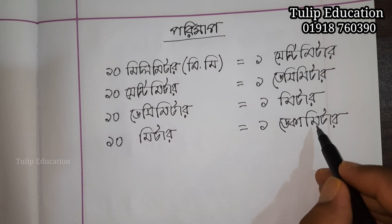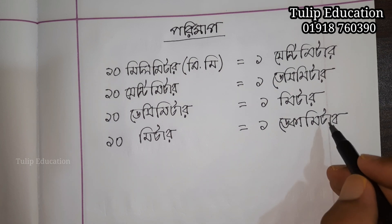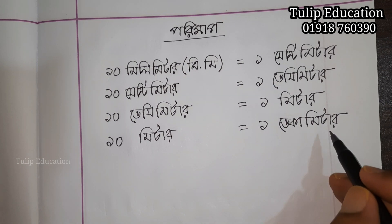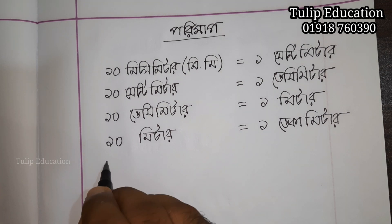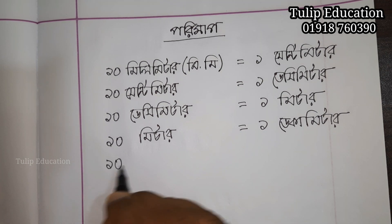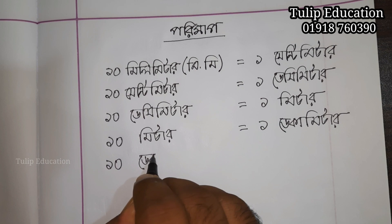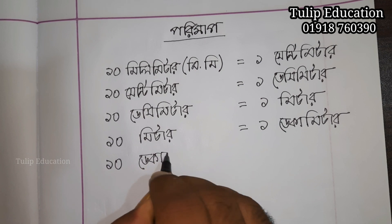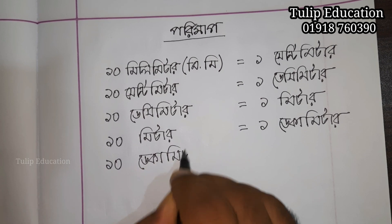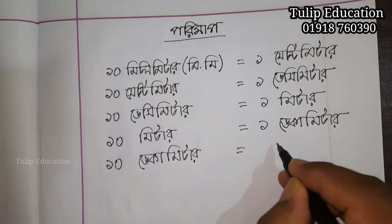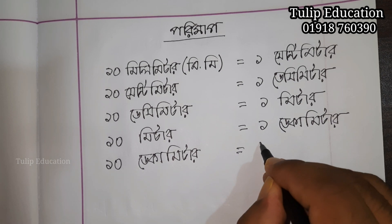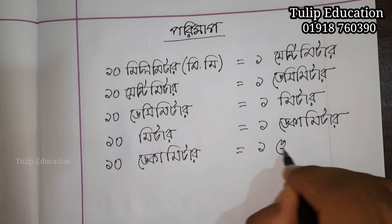How much decameter is 1 meter? It's 10 by 1 meter, or 1 by 10 decameter. How much is 10 decameter? 10 decameter is 1 hectometer.